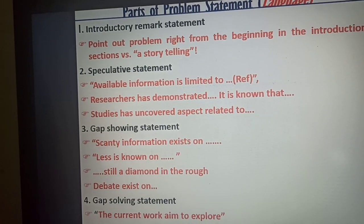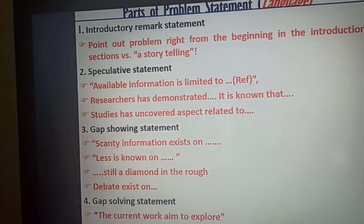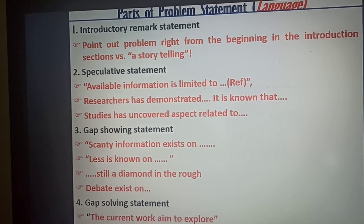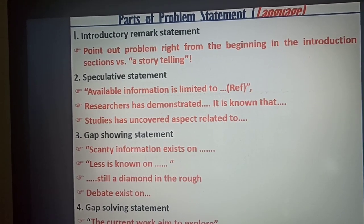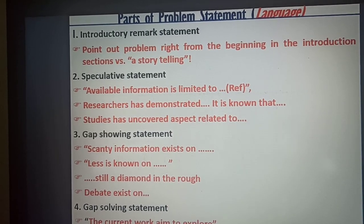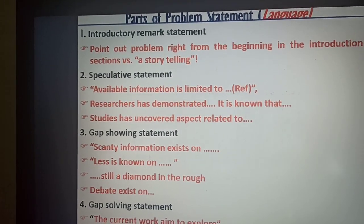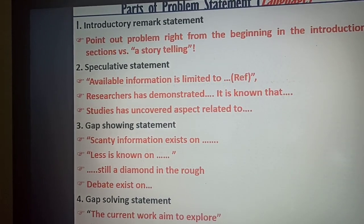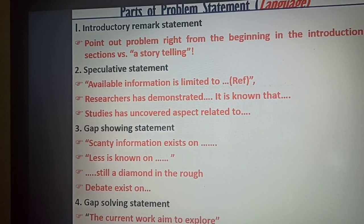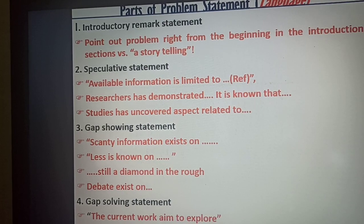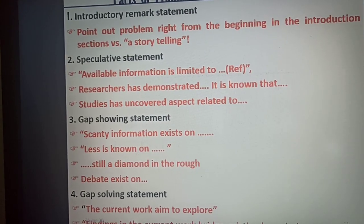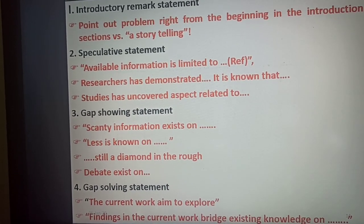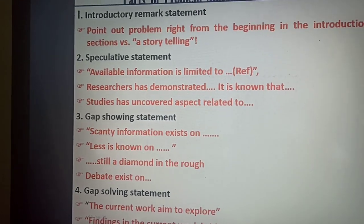After the speculative statement, you go to the gap-showing statement. Under the speculative statement you give information about what is well-known — studies by various researchers have narrated, pointed out, and reported on certain findings. However, there is information not yet well-documented and therefore missing in the literature. That gap-showing statement highlights that scarce information exists on certain topics, and that certain things are still unknown and need to be made known.